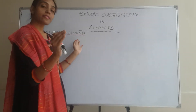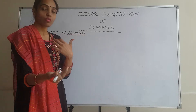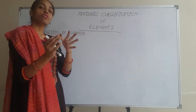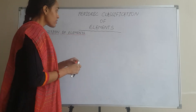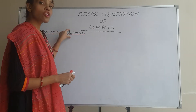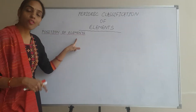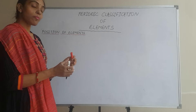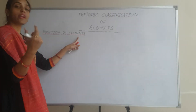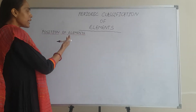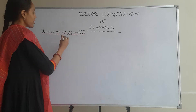Where are the elements residing in the periodic table? Like if I ask you what is your residential address, you also tell like 42A, or near this landmark. Similarly, what is the residential address of the elements? In scientific terms, we say the position of elements — in which group and in which period they are existing. And it is not typical science, it is simple mathematics, simple calculations.